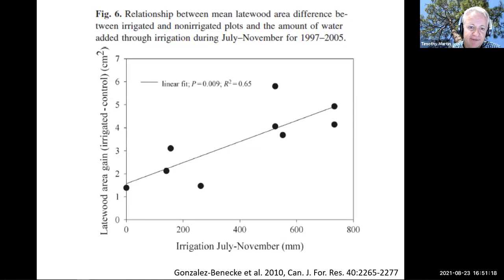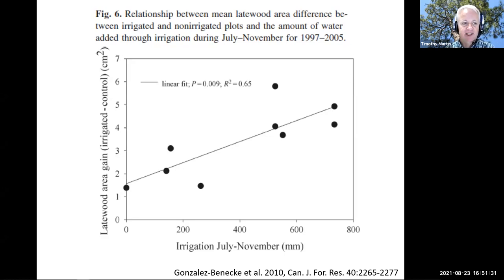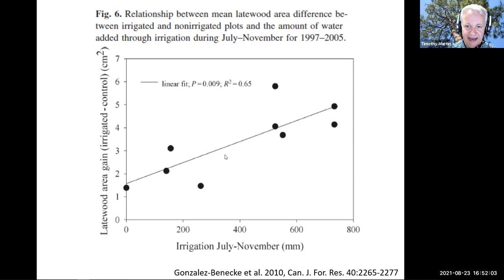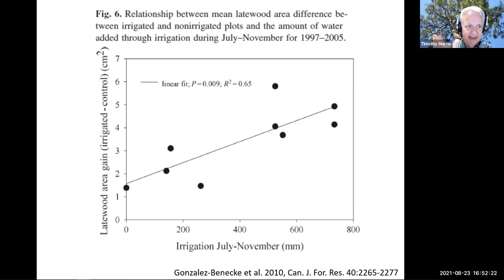Here's another example of changes in phenology associated with change in environment. In an irrigation experiment in loblolly pine, it was found that with irrigation these trees continued growing later into the growing season, allowing them to put on more late wood in their tree rings. The more irrigation that was applied, the longer into the growing season these trees grew, and the more late wood they put on. This is a great example of soil moisture influencing the phenology of growth in loblolly pine.